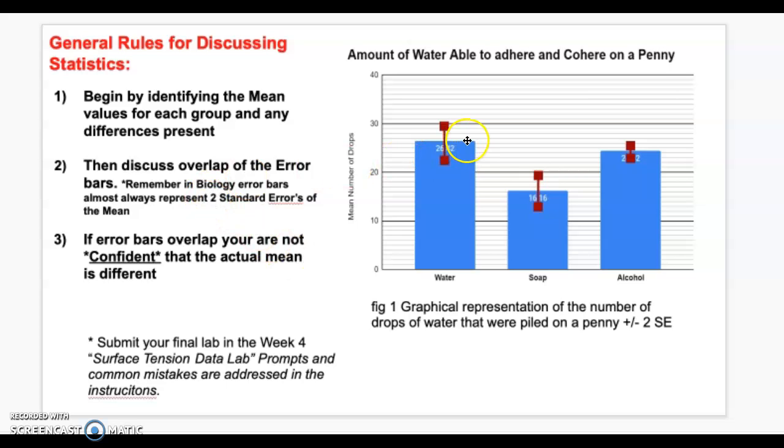Yes, the number of the mean is different, but we're not confident that they're actually different. If you could drop water an infinite number of times, and if you could drop alcohol in a penny an infinite number of times, will the values actually be different or will they be the same? Well, we are not confident that they will actually be different. Okay?